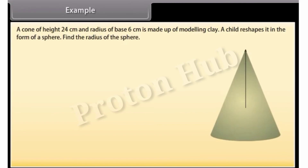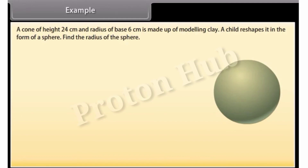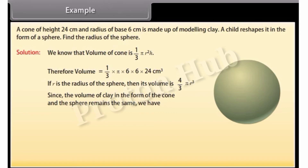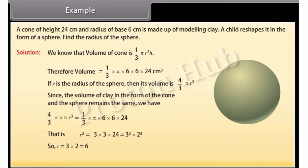Example: A cone of height 24 cm and radius of base 6 cm is made of modeling clay. A child reshapes it in the form of a sphere. Find the radius of the sphere. Solution: Volume of cone = (1/3)πr²h = (1/3) × π × 6 × 6 × 24 cm³. If r is the radius of the sphere, its volume is (4/3)πr³. Since the volume of clay remains the same, solving gives r = 6. Therefore, the radius of the sphere is 6 cm.